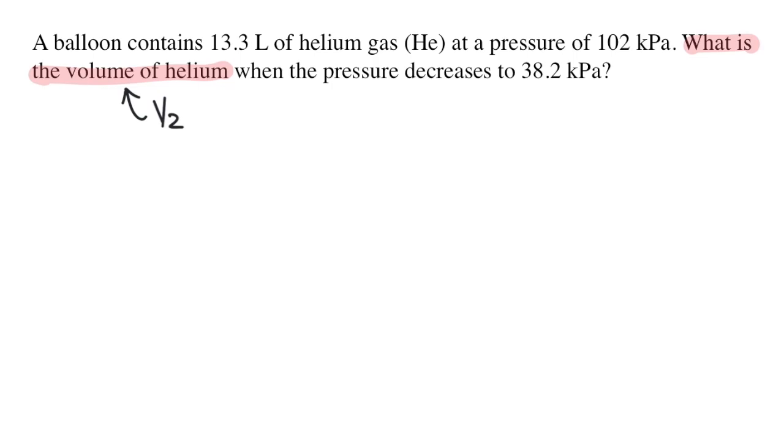Next, I'm going to use green to highlight the given information. The starting conditions are given first. The balloon starts with a volume of 13.3 liters. I'll label that V1, and the pressure is 102 kilopascals, so that will be P1. Remember that the ones are the starting or the initial conditions.